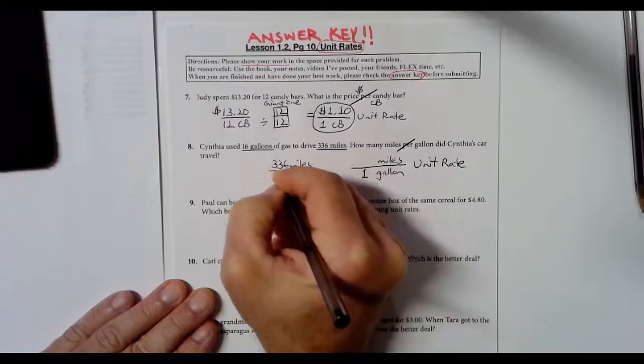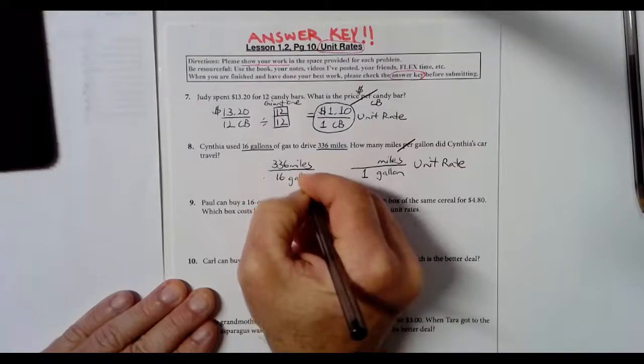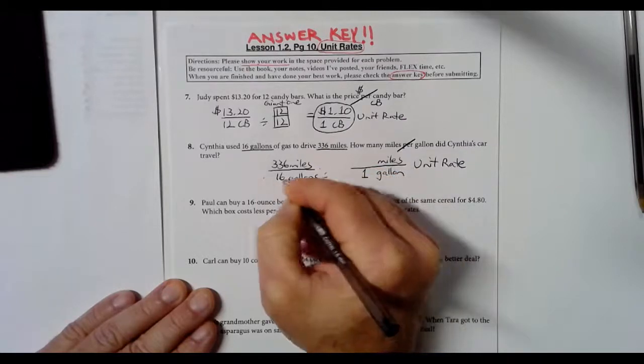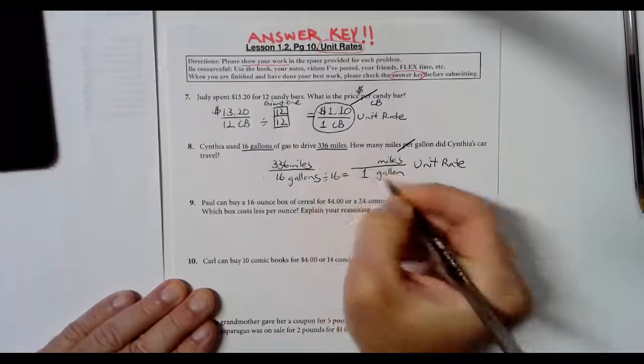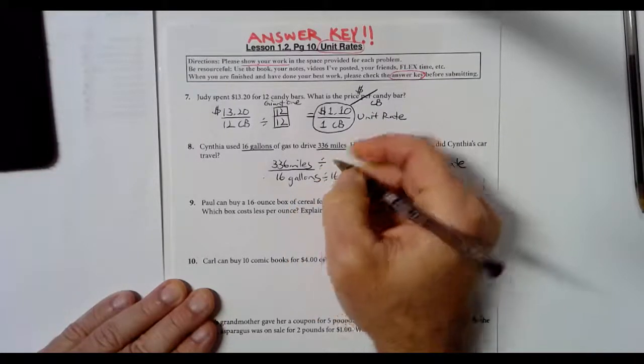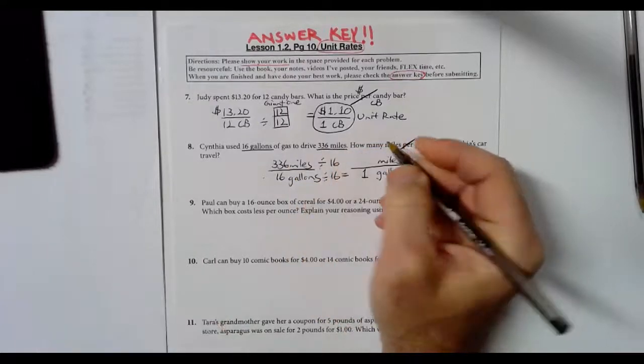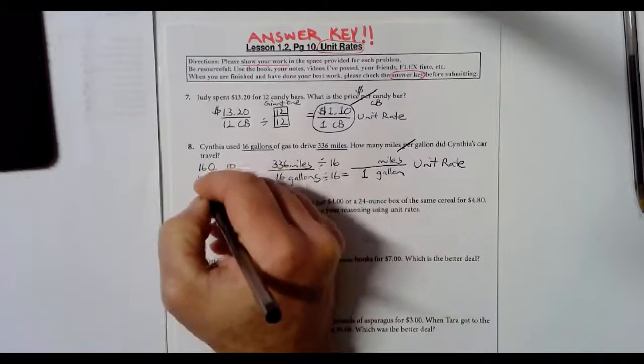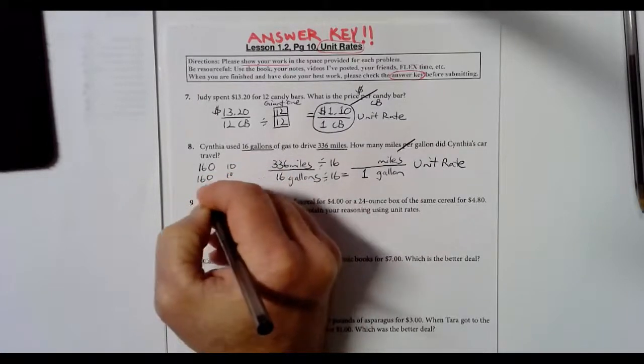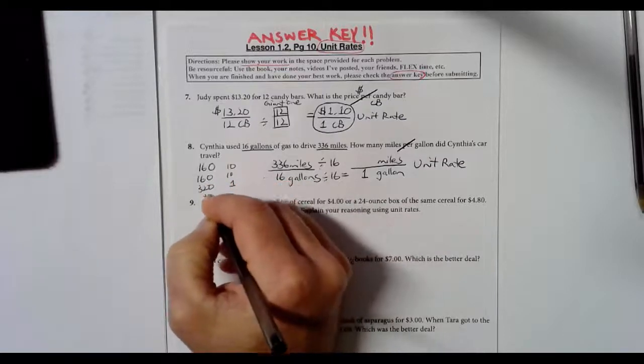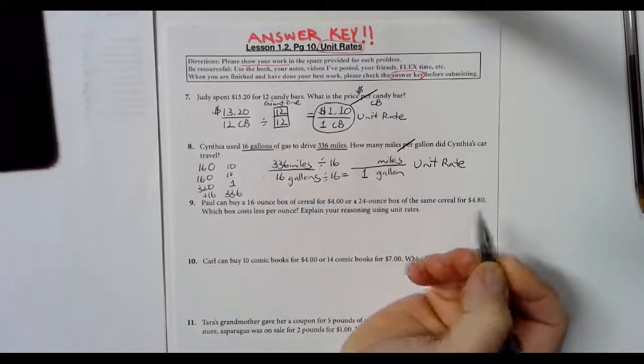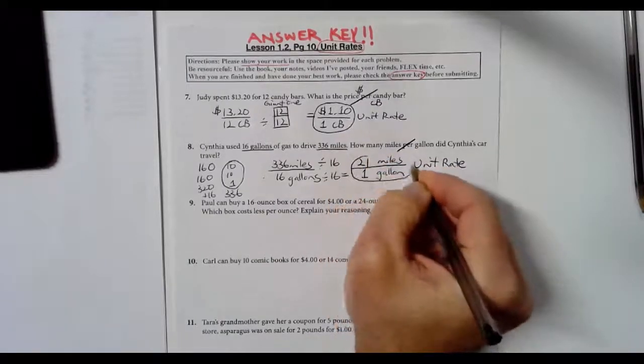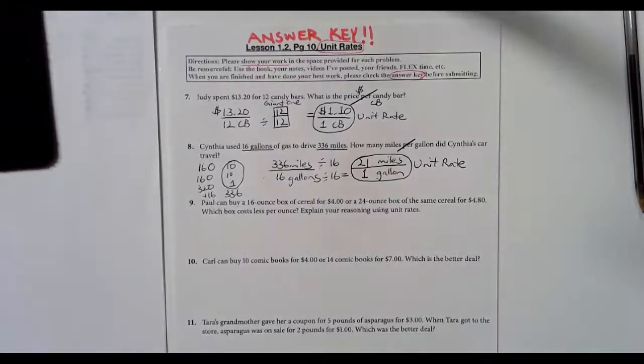336 miles for every 16 gallons. Just like up above, I'm going to use the giant one. I'm going to divide 16 by 16, gives me that unit rate, and then I'm going to divide 336 by 16. I use a little mental math. I think, well, 16 times 10 is 160, and another 10 makes 320, and one more makes 336. So with a little mental math, I can figure out that I have 21 miles per gallon.